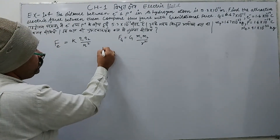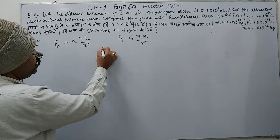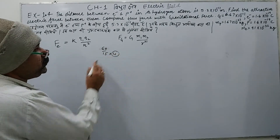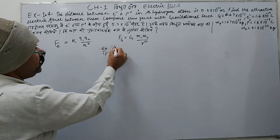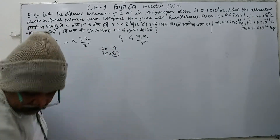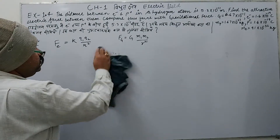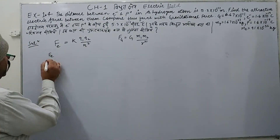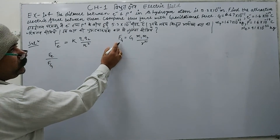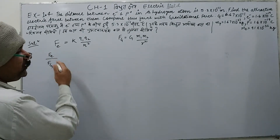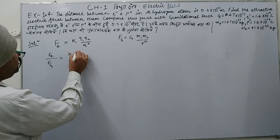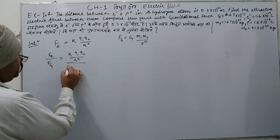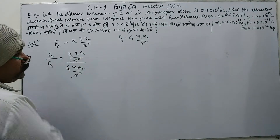When we compare, we set up the ratio Fe upon Fg. The electrostatic force Fe equals K Q1 Q2 upon R², and the gravitational force Fg equals G M1 M2 upon R². Taking the ratio Fe/Fg, the R² cancels since it is the same in both expressions.